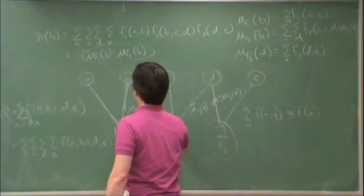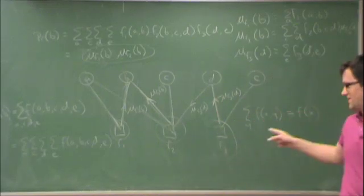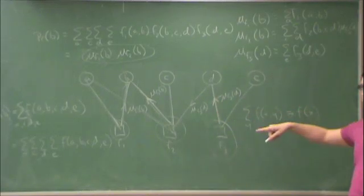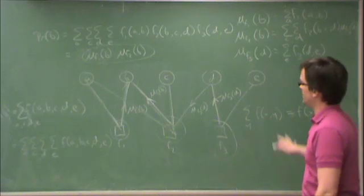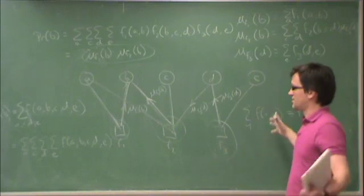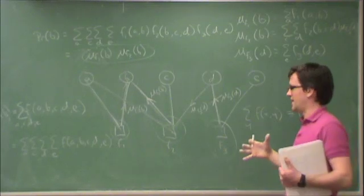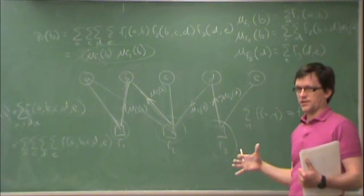A cycle is any path that starts and stops, that doesn't recur, or doesn't use any edge twice, but still ends up in the same way. So this method is guaranteed to exist some message passing schedule, some way to pass messages.